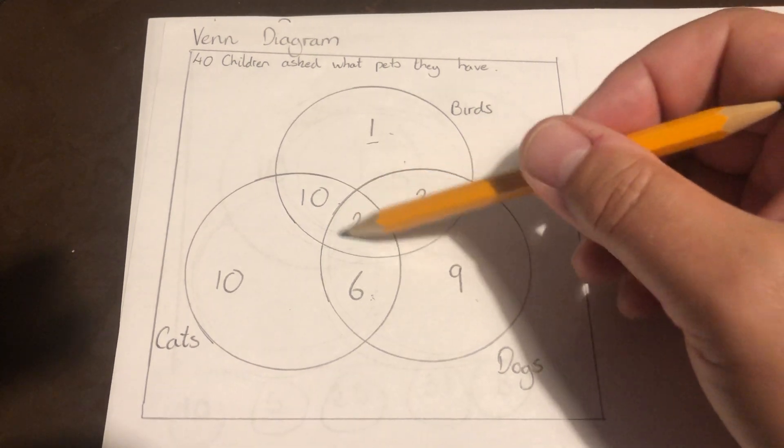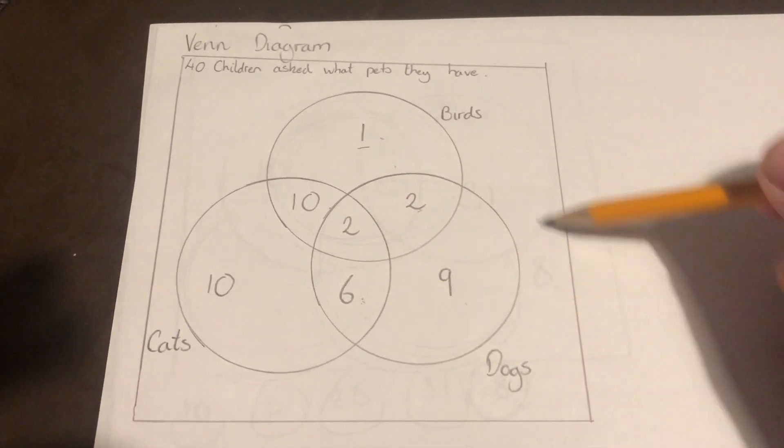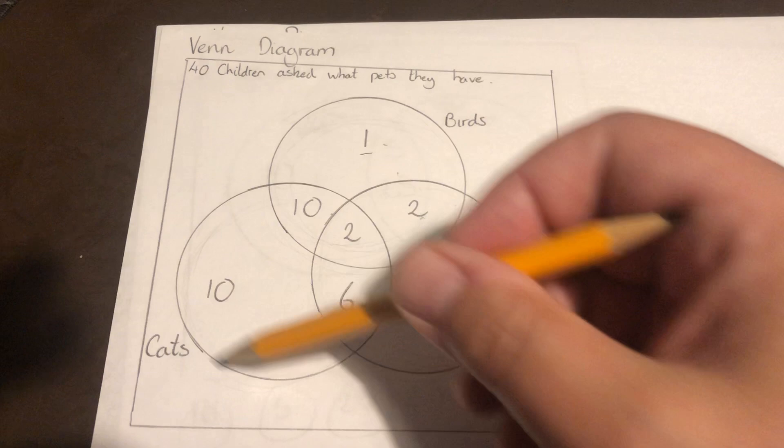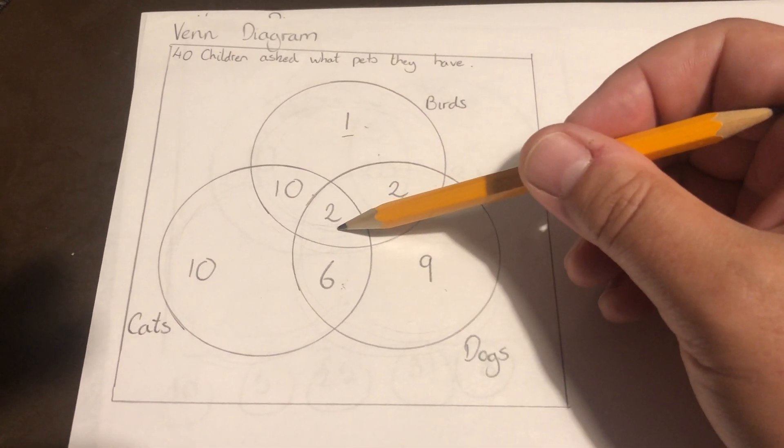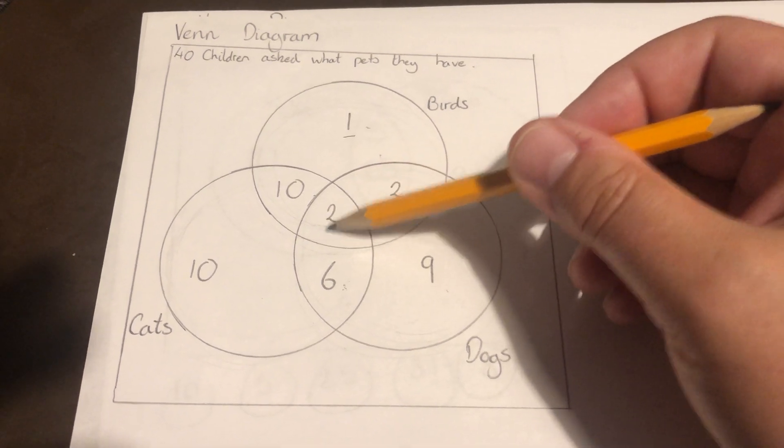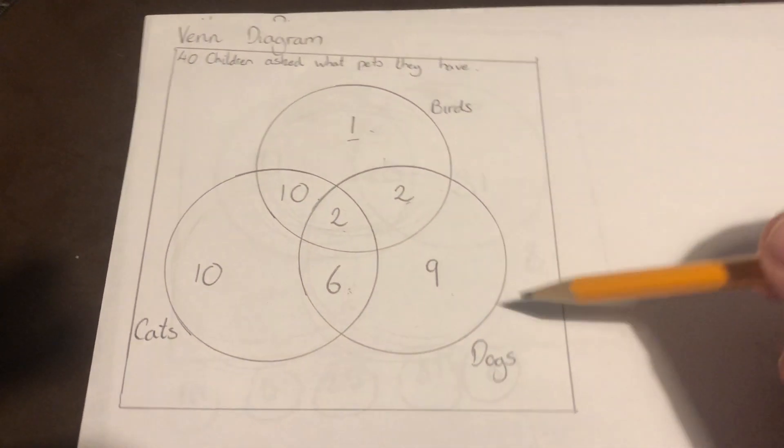In the center here, there's 2. If we look, it's inside the dog circle. It is inside the cat circle. It is inside the bird circle. So this one in the center is in all the circles. That means they've got all three pets.